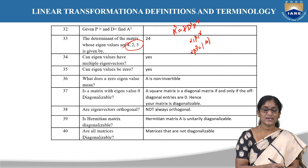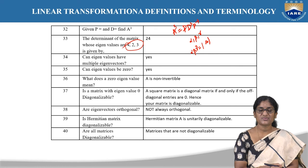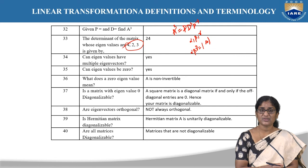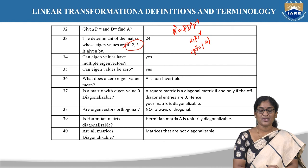Can an eigenvalue have multiple eigenvectors? Yes, an eigenvalue can have multiple eigenvectors — when we assume linearly independent vectors while finding eigenvectors, we may obtain multiple eigenvectors for a single eigenvalue. Can an eigenvalue be 0? Yes. A zero eigenvalue means the matrix A is non-invertible — that is, the inverse does not exist.